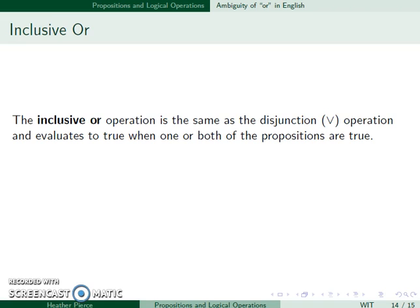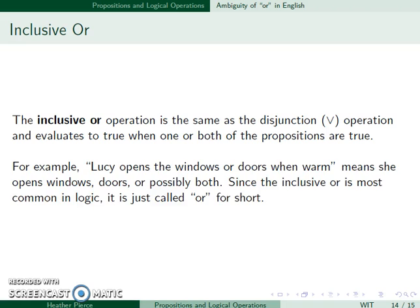The inclusive or is the same as our disjunction operation. It evaluates to be true when one or both of the propositions are true. For example, Lucy opens the windows or doors when warm means she opens the windows, doors, or maybe both. The inclusive or is the most common one in logic, so we just call it the or.